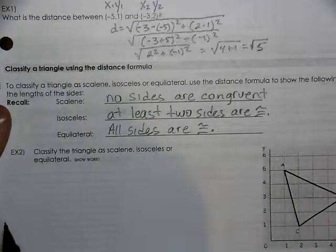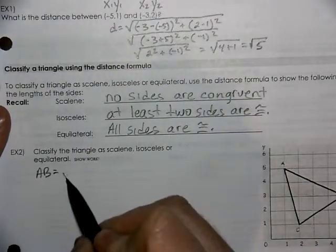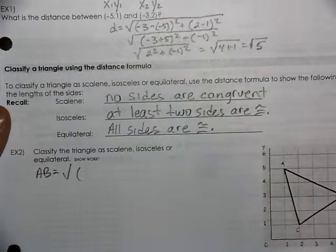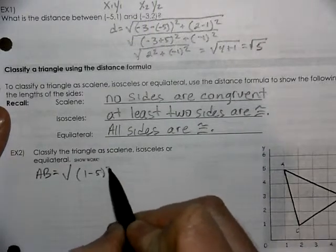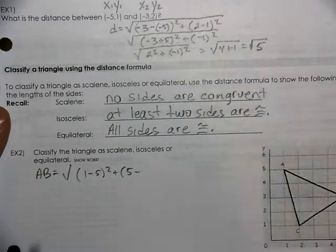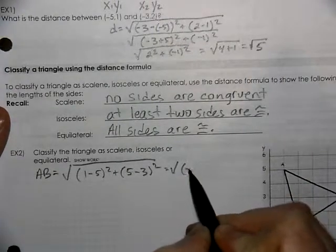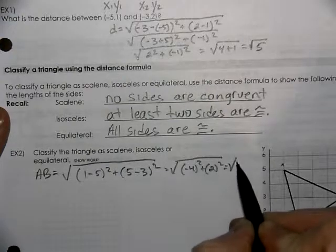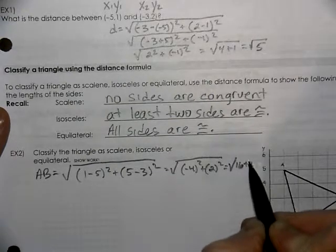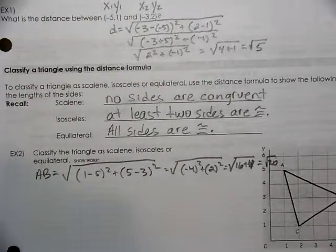So we'll come down here. We'll look at the length of AB. For our x values we've got 1 minus 5, and 5 minus 3. Negative 4 squared, 2 squared. 16 plus 4 gives us the square root of 20. That could be simplified down into 4 times 5 which is 2 root 5.